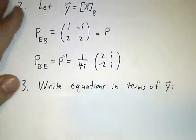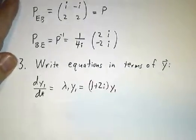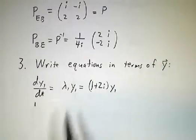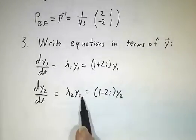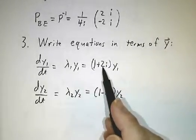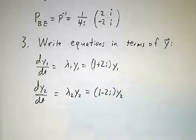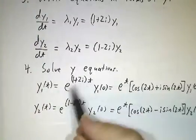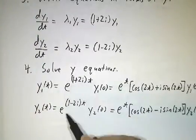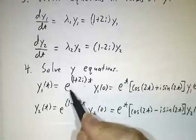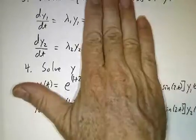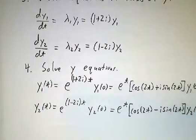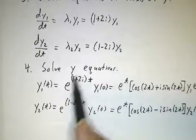Next step is to write our equations in terms of y, and just as before, the derivative of y1 is λ1 y1, and the derivative of y2 is λ2 y2. The only change is that λ1 and λ2 happen to be complex. And what's the solution to those differential equations? Well, it's always e to the λt. That's the definition of e to the λt. e to the λt is the solution to dy/dt equals λy.